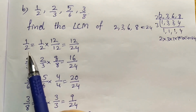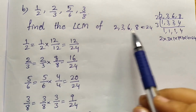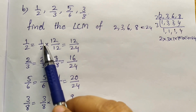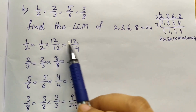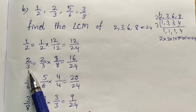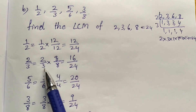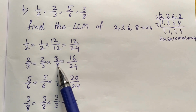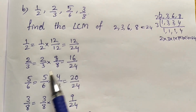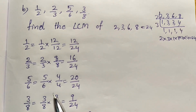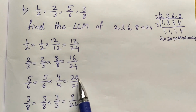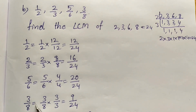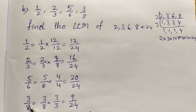Convert into equivalent fractions. 1 by 2: to get 24, multiply by 12 — 1 by 2 into 12 by 12 equals 1 into 12 = 12, 2 into 12 = 24, giving 12 by 24. And 2 by 3: to get 24, multiply 3 by 8 — 2 into 8 = 16, 3 into 8 = 24, giving 16 by 24. And 5 by 6: to get 24, multiply by 4 — 5 into 4 = 20, 6 into 4 = 24, giving 20 by 24. And 3 by 8: to get 24, multiply 8 by 3 — 3 into 3 = 9, 8 into 3 = 24, giving 9 by 24.